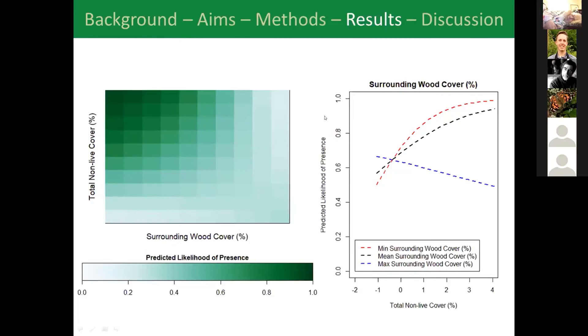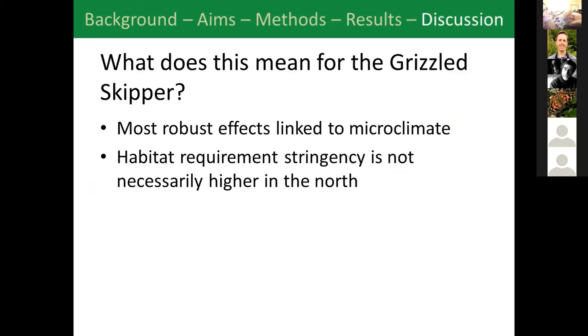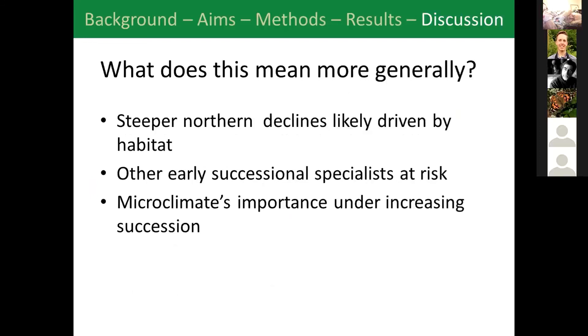What we can take away from this is most of the effects that were kept in the models that were important for the grizzled skipper were related to warmer microclimates - it seems like shade, sward height, non-live cover they were some of the most important effects. What we also saw was that the habitat requirements don't appear to be stricter in the north and why this is particularly relevant is as we've seen steeper declines in the north that suggests that something else is responsible. That suggests that there is potentially differences in the north and south or geographically about the habitat availability or quality or connectivity and there could be plenty of reasons for this - it could be the way that the habitat is managed, it could be the type of habitat and the pressures it faces, it could be barriers to movement maybe denser woodlands in between patches.